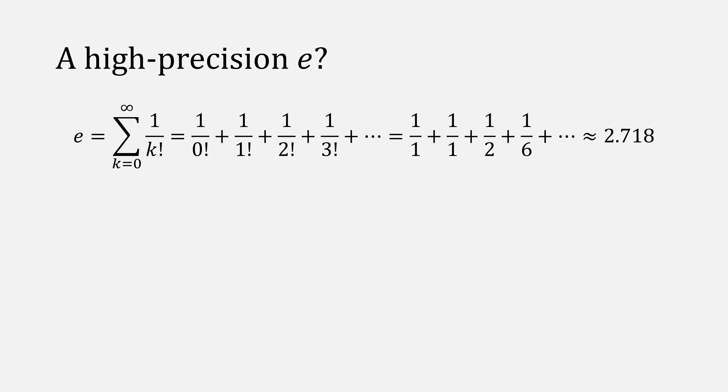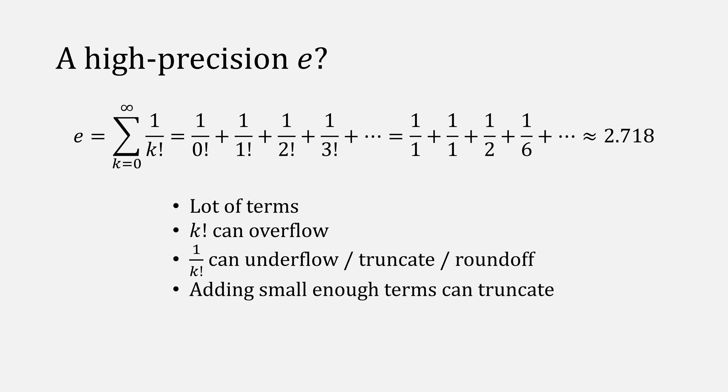Changing gear slightly, what if you wanted just a very good value for e? Given that it's an irrational number, it's a lot of terms that you'll need to add up to get really high precision. Each of these can also overflow when you have large values for k, and that division can cause roundoff or truncation error, and adding very small numbers can also cause errors.